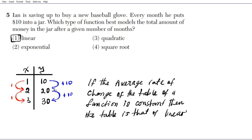The answer to question 5 is option 1 because the average rate of change is always constant. For exponential functions you would see repeated multiplication. For quadratic functions the second difference is constant. For square root functions, examine whether the input is being square-rooted to generate the output. Since we're adding the same constant — a common difference — the function is linear.